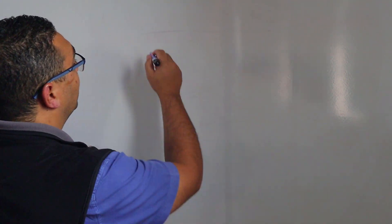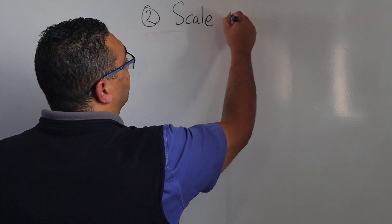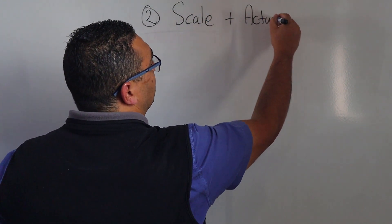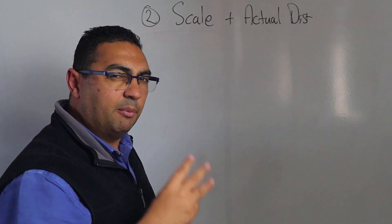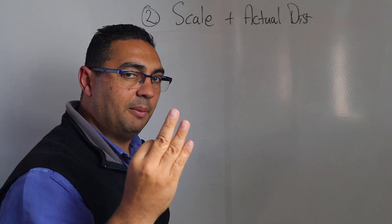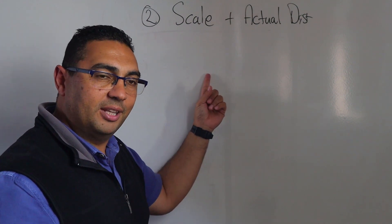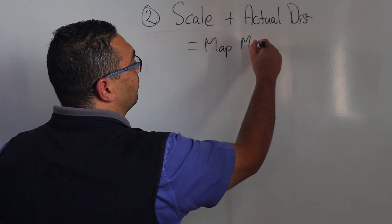The second example now is where I have again the scale, but I've now got the actual distance. So if I'm only usually asked for three things which is scale, actual distance, and map measurement, what do you think they're looking for in this? I'm looking for the map measurement.